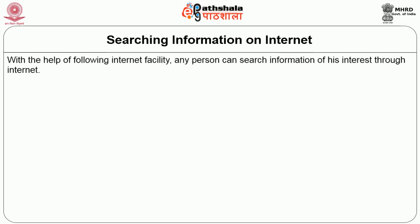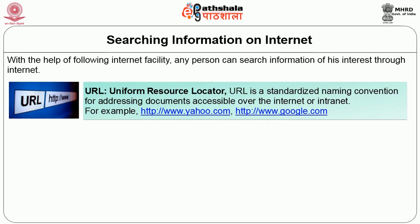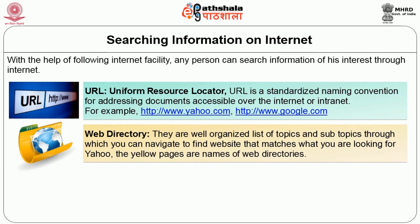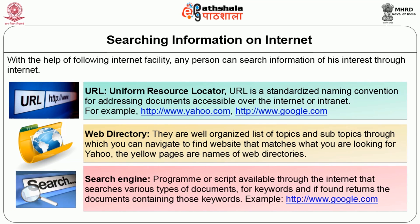Searching information on the internet: with the help of the following internet facilities, any person can search information of their interest. URL (Uniform Resource Locator) is a standardized naming convention for addressing documents accessible over the internet or intranet — for example, yahoo.com and google.com. Web directories are well-organized lists of topics and subtopics through which you can navigate to find websites that match what you are looking for — Yahoo is an example of a web directory. A search engine is a program or script available through the internet that searches various types of documents for keywords and returns the documents containing those keywords — for example, http://www.google.com.